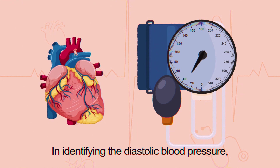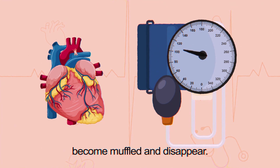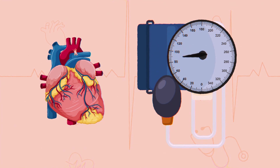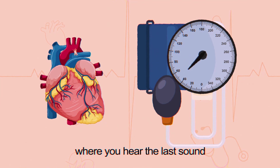In identifying the diastolic blood pressure, continue to deflate the cuff slowly until the sounds become muffled and disappear. Take note of the pressure level where you hear the last sound.